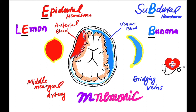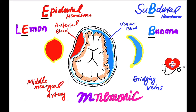Epidural or extradural hematoma is convex shaped, and it is the collection of arterial blood due to the rupture of the middle meningeal artery. Subdural hematoma is concave or crescent shaped, and it is the collection of venous blood due to the rupture of the bridging veins.